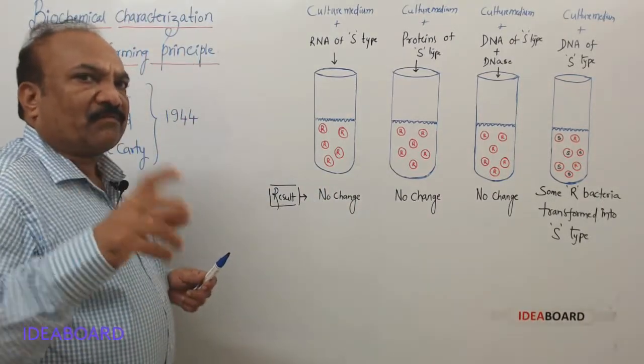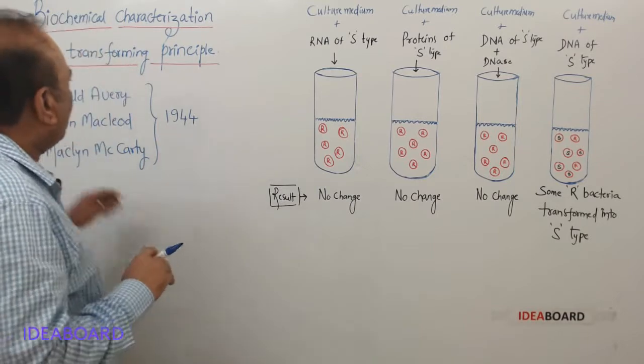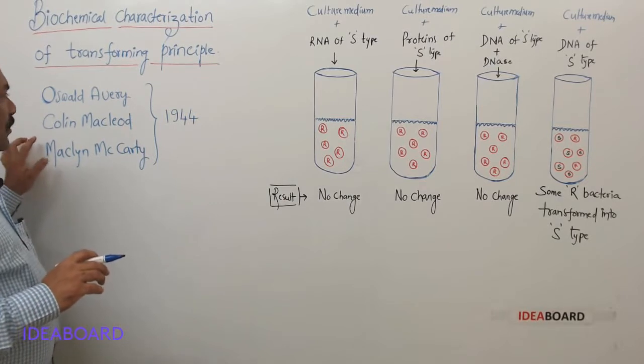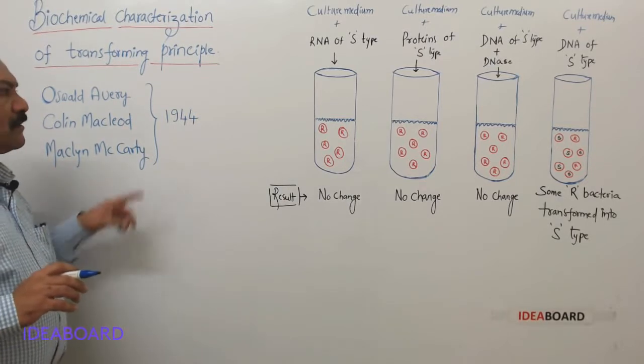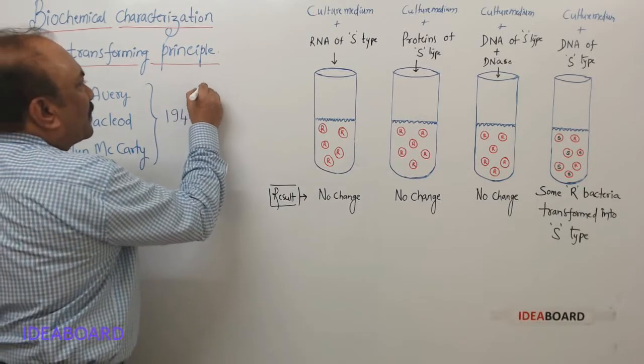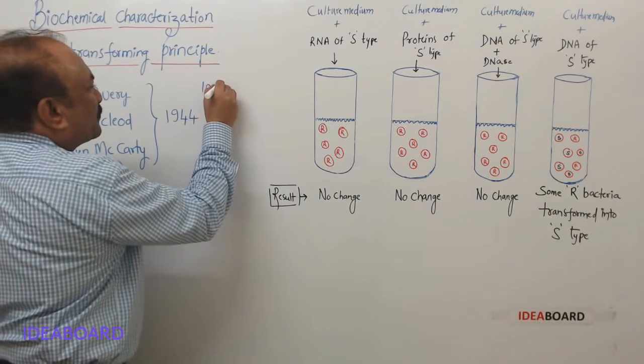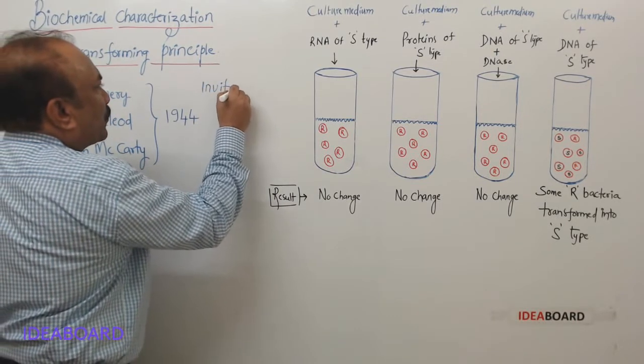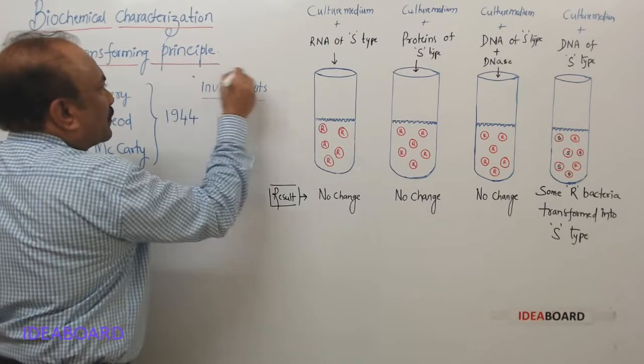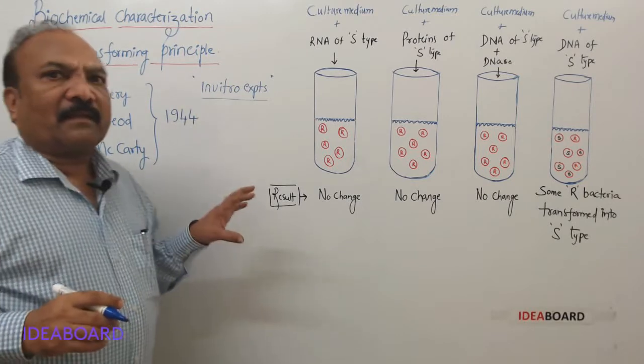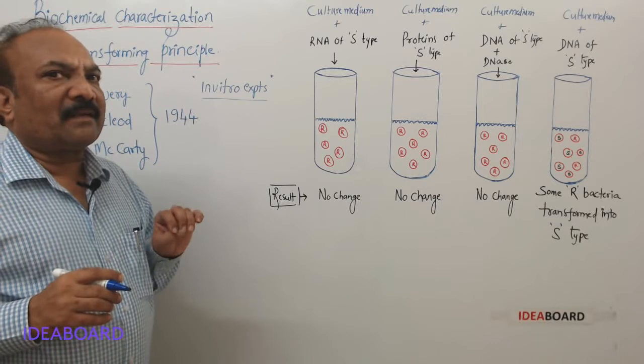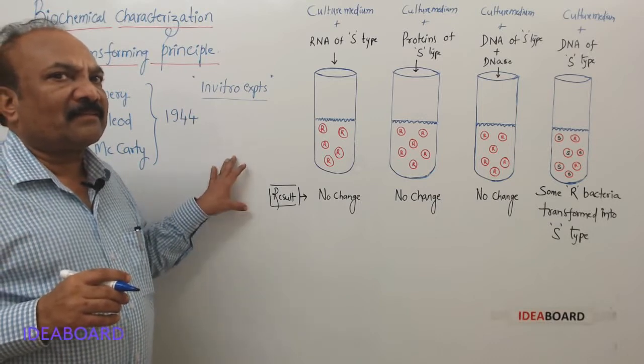Later, the biochemical characterization was done by three people: Oswald Avery, Colin MacLeod, and Maclyn McCarty in the year 1944. These experiments are called in vitro experiments because these are laboratory experiments. They have not used any living material like mice here.